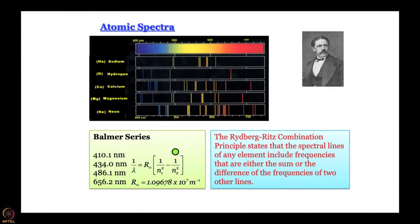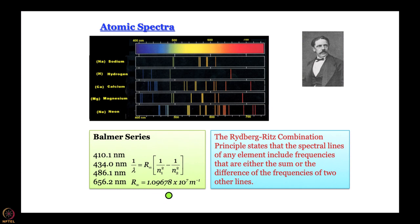Even before a theoretical formulation to explain this was worked out, experimentally looking at the energies where the emissions take place for different atoms, an empirical formula was already there - called the Rydberg formula. It is based on the Rydberg-Ritz combination principle, which states that the spectral lines of any element include frequencies that are either the sum or difference of frequencies of two other lines. What it boils down to is that 1/λ (wave number) equals a constant multiplied by (1/n₁² − 1/n₂²), where n₁ and n₂ are two positive integers.